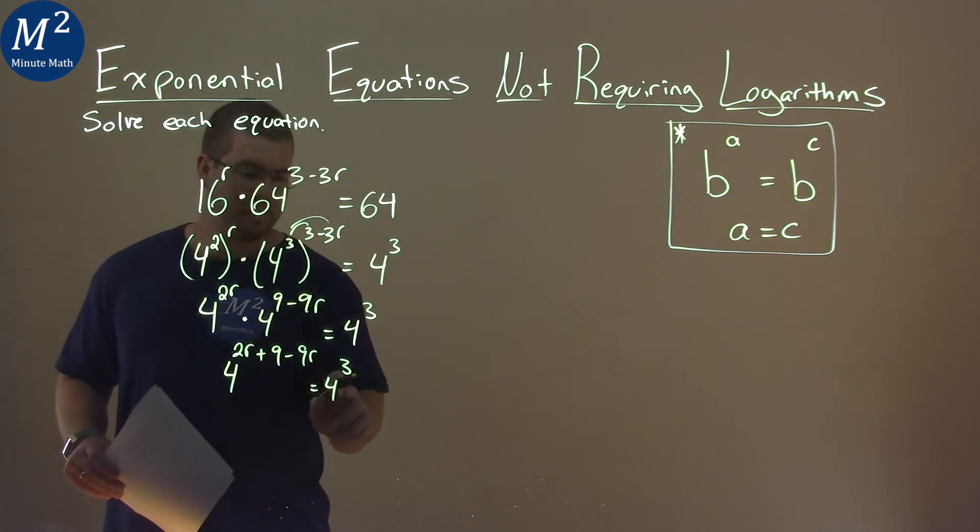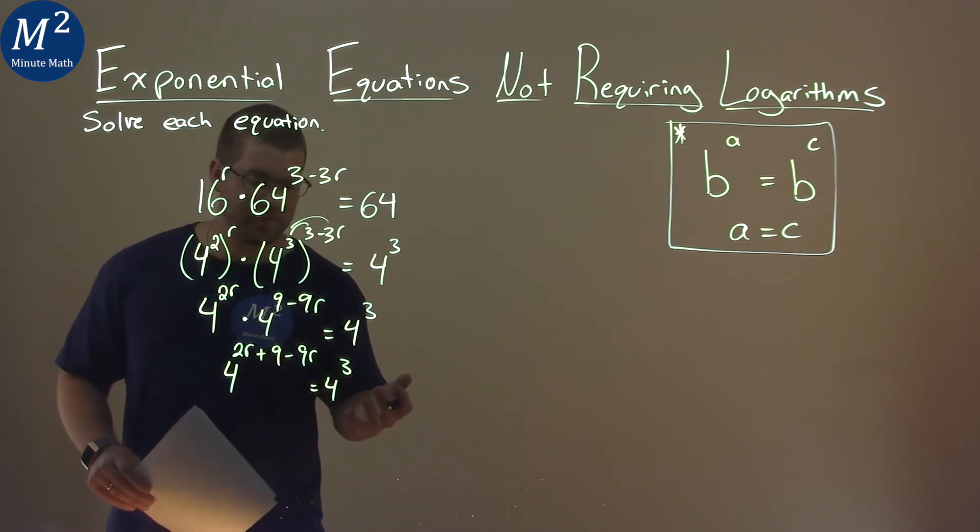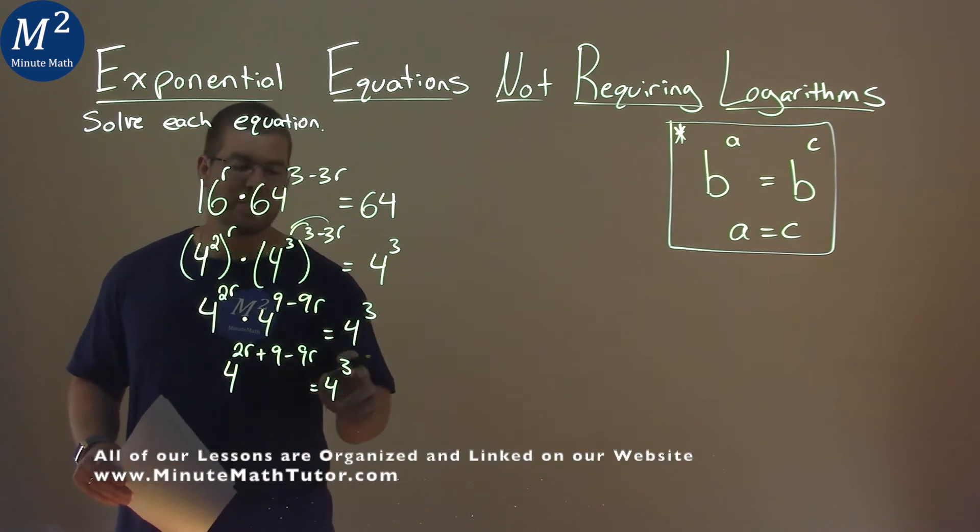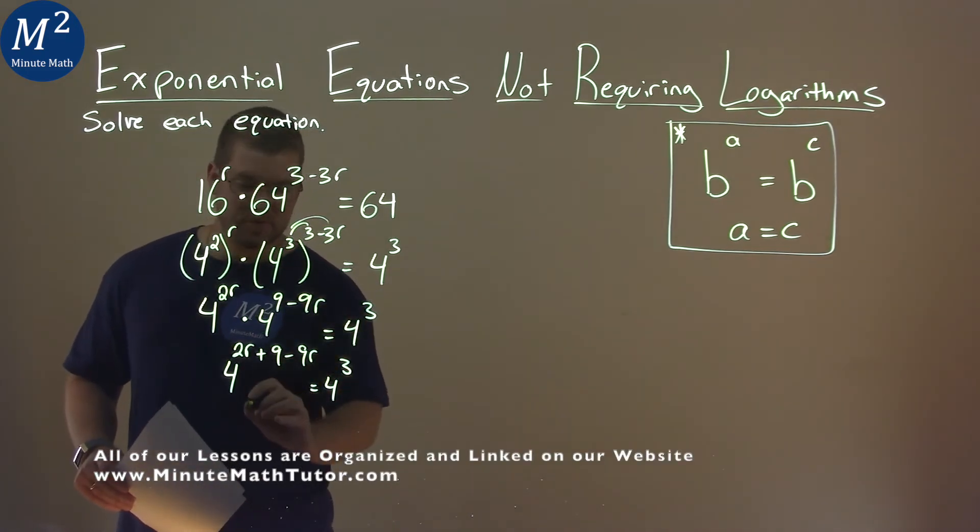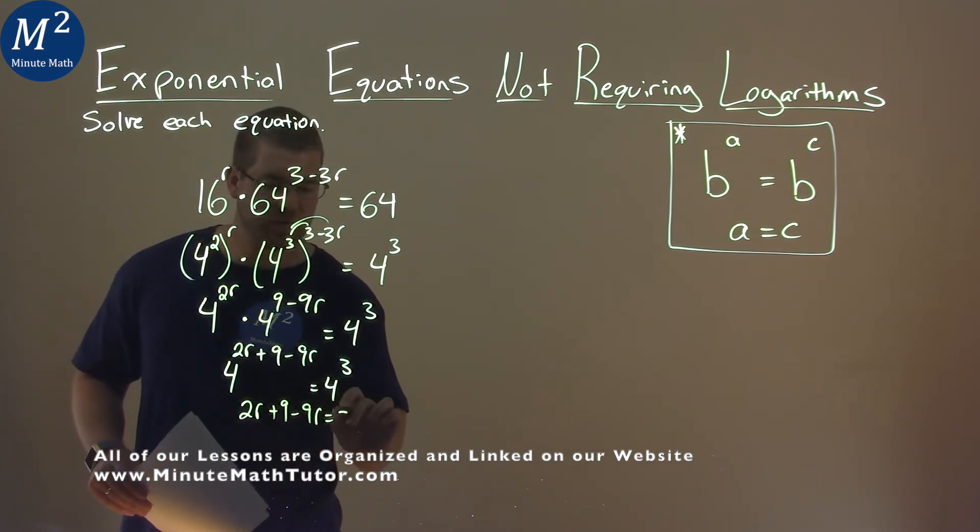Now, we have the same base again with 4 over an equal sign. With all these exponent rules, when that happens, we just set the exponents equal to each other.